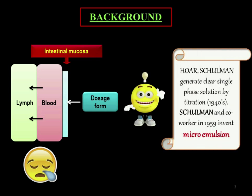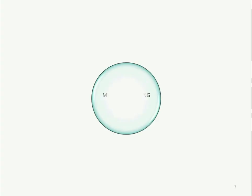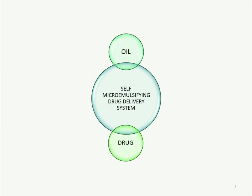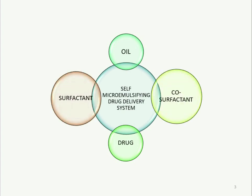One day, Hoare and Shalman generated a clear single-phase solution by a titrasonic method in the 1940s. Shalman and co-workers in 1959 invented the micro emulsion technique. The Self Micro Emulsifying Drug Delivery System is produced by mixing oil and drug into a beaker with co-surfactant and surfactant.